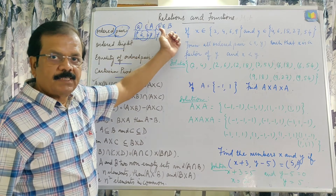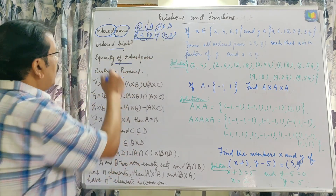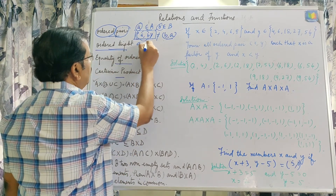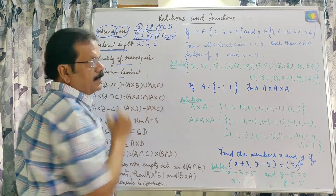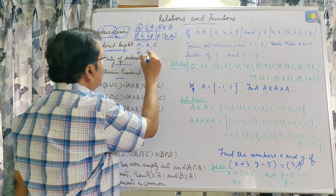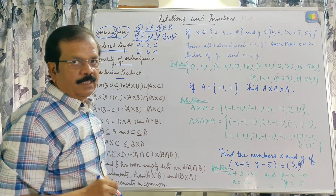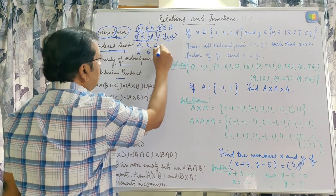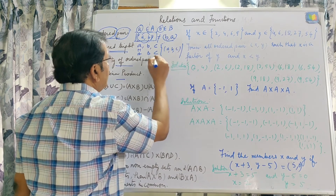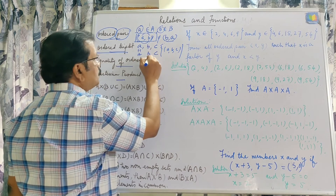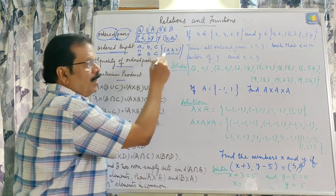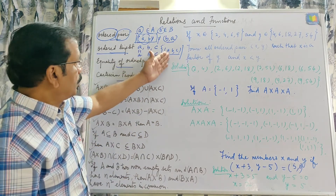Secondly, the ordered triplet: if we are given three elements A, B, and C from three different non-empty sets A, B, and C, then in that case they are written in the form (A, B, C) such that A belongs to set A, B belongs to set B, and C belongs to set C. Written in a certain order, this is called an ordered triplet.